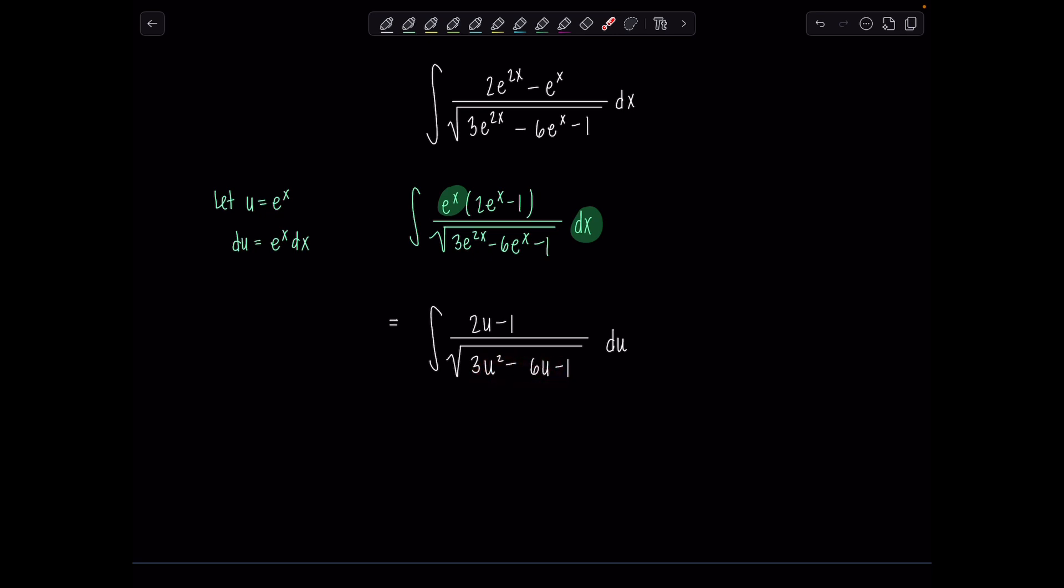But first, I'm going to factor out the constant 3 from everybody, since it's easier to complete the square when the coefficient on my quadratic term is just a 1. So if I factor out a 3, I'm going to have u squared minus 2u minus 1 third, all underneath the radical. And then I'm going to pull out that 3 in the front, but really it's a square root of 3. So we have 1 over rad 3 times the integral 2u minus 1 over square root u squared minus 2u minus 1 third du.